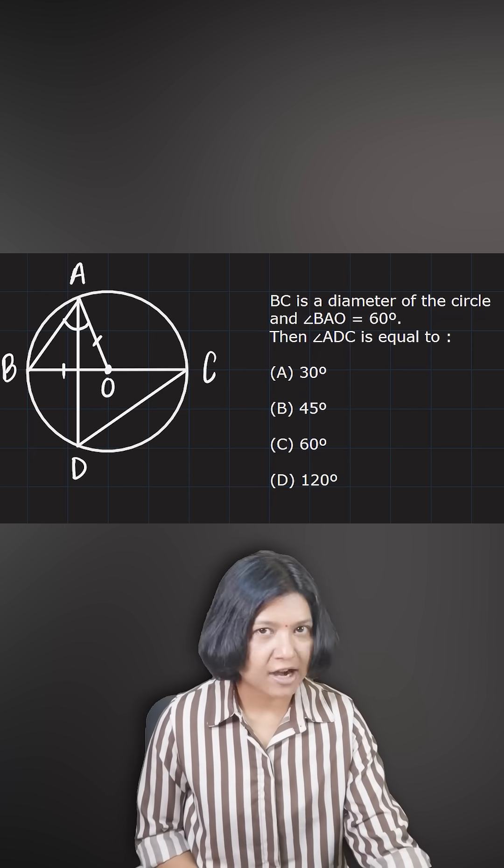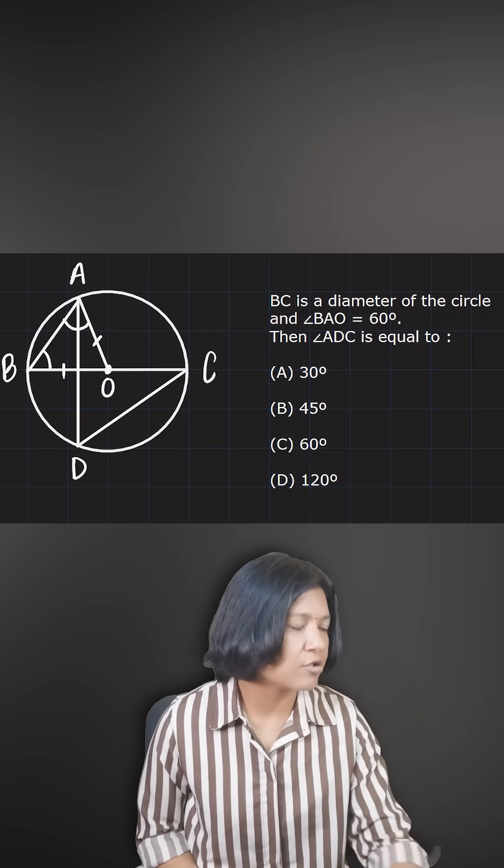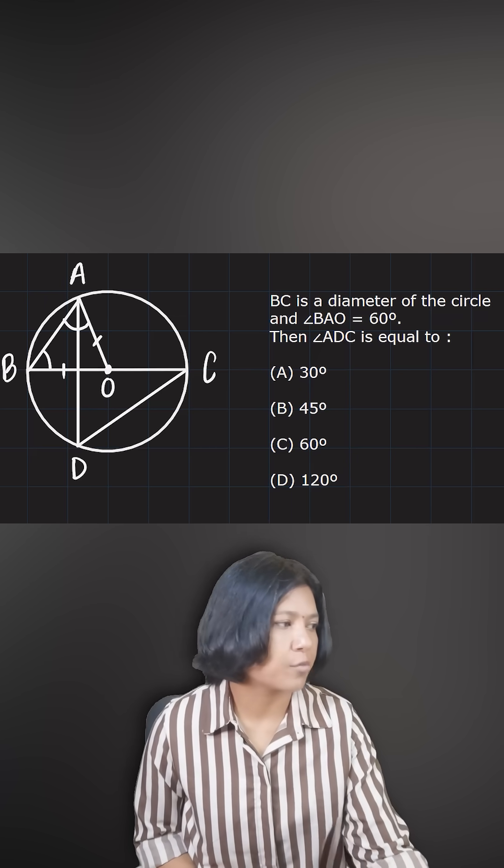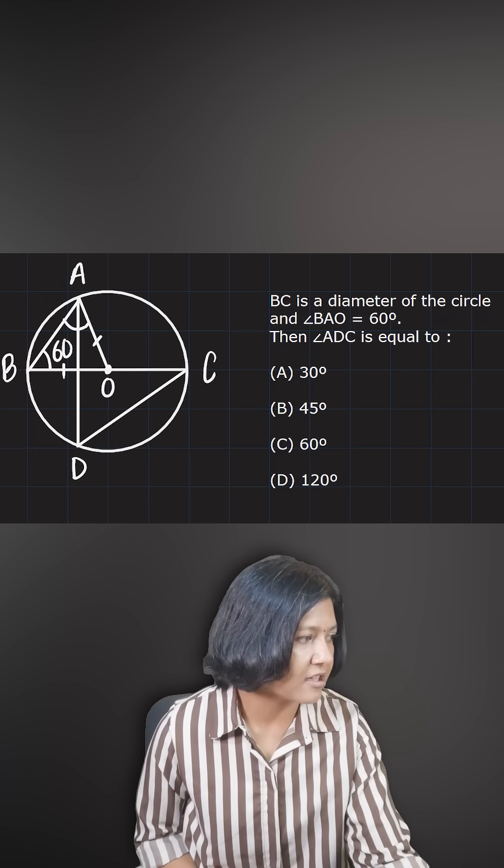So therefore, the two lines are radius here, thereby giving me two equal angles, this one and this one. So both of them have to be 60 degrees each.